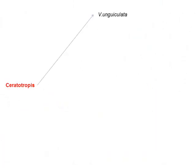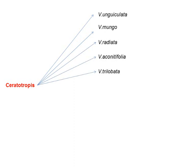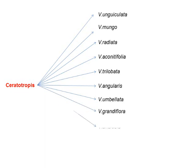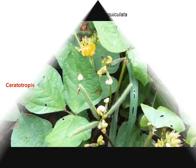Ceratotrophis consists of the species Vigna angulata, mungo, radiata, aconitifolia, trilobata, angularis, umbellata, grandiflora, aridicola, exilis, and minima.